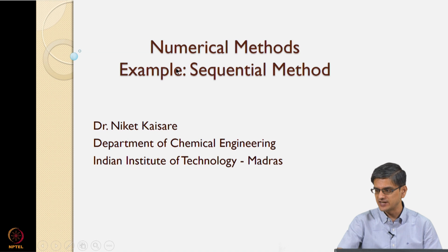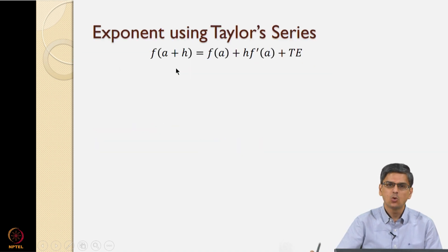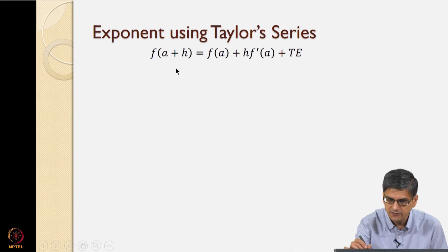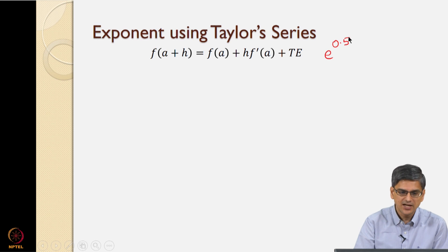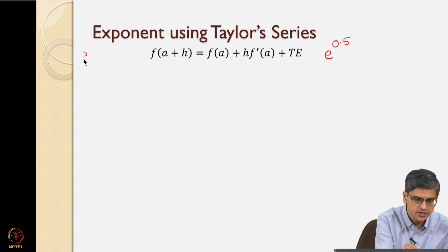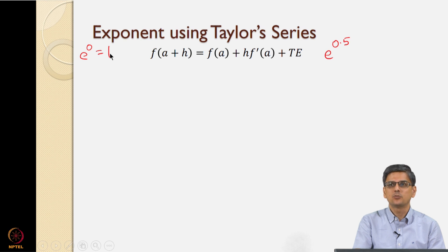Now we are going to use a stepwise or sequential method. So what do we mean by stepwise or sequential method? Like the last time, let us say we want to find the value of e to the power 0.5. What we know is the value of e to the power 0, which is equal to 1. What we had done was we went from e to the power 0 to e to the power 0.5 using a direct method using multiple terms in the Maclaurin series.